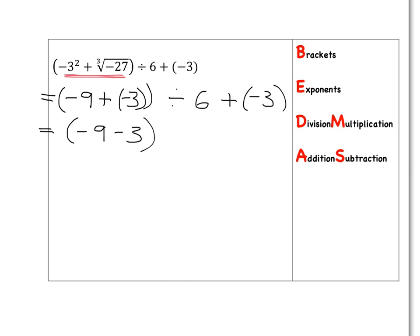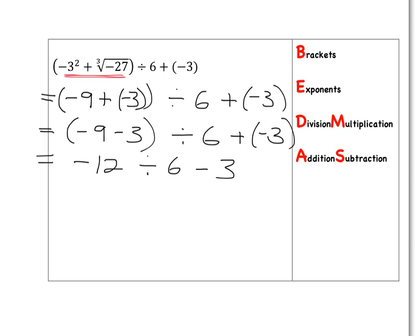Adding a negative is the same as subtracting. Let's sort out that bracket first: negative 9 subtract 3 gives you negative 12, then divide by 6. Adding a negative is just the same as subtracting.